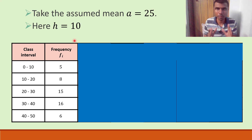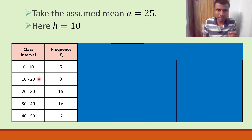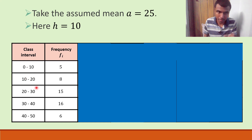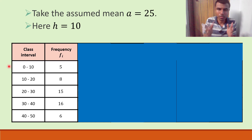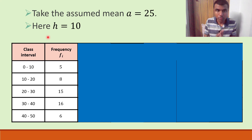What is h? H is nothing but the length of the class interval. You see: 0 to 10, so 10 minus 0 is 10; 20 minus 10 is 10; 30 minus 20 is 10. So h is 10 — the width of each class interval.